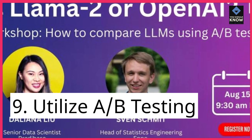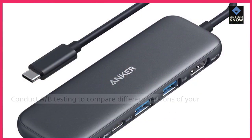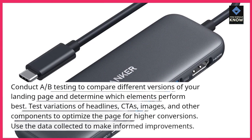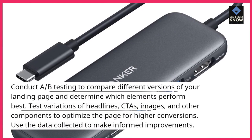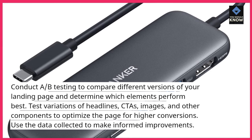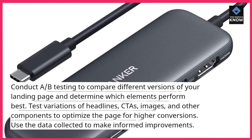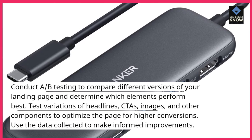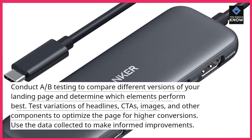9. Utilize A/B testing. Conduct A/B testing to compare different versions of your landing page and determine which elements perform best. Test variations of headlines, CTAs, images, and other components to optimize the page for higher conversions. Use the data collected to make informed improvements.